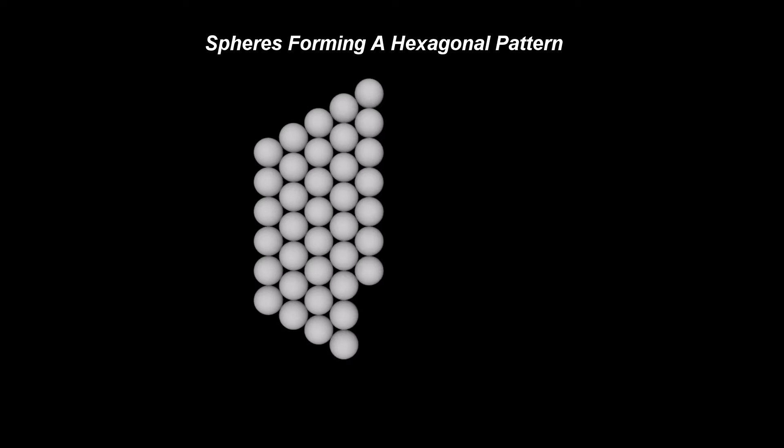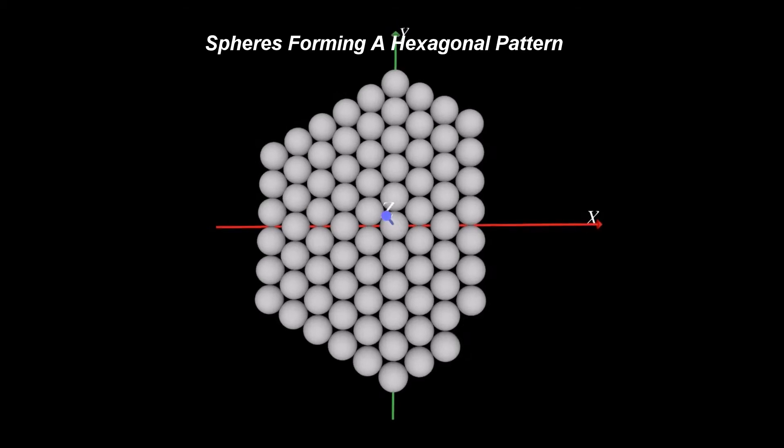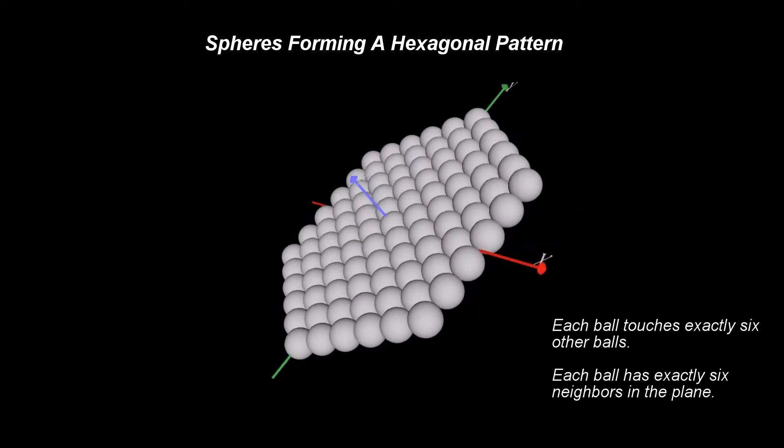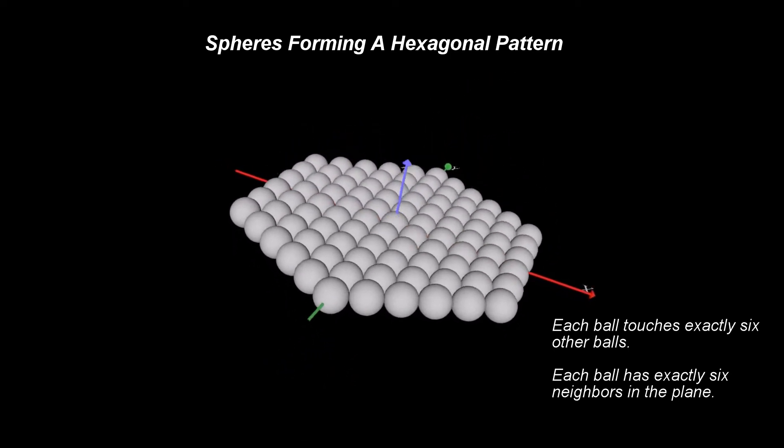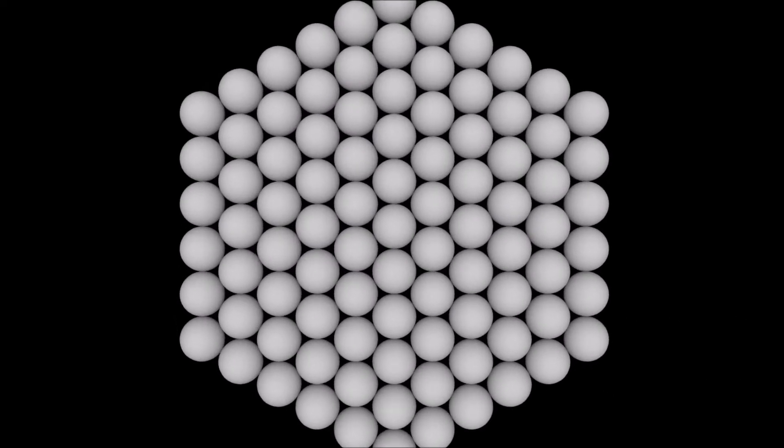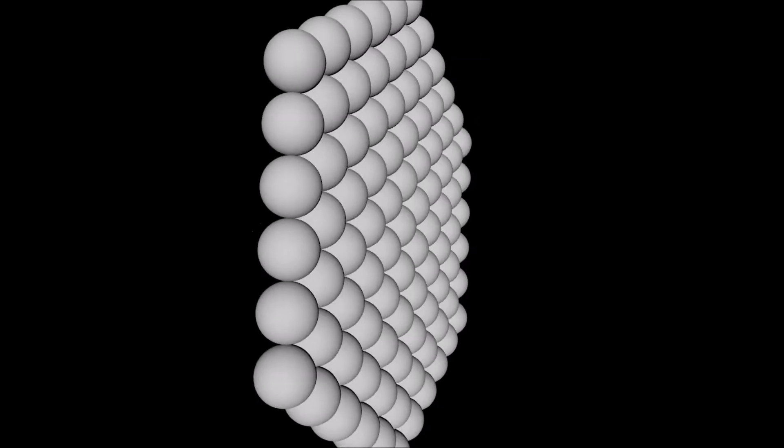When you ask your friend to fill up her room with ping pong balls, you get surprised to see that she, being a more artistic person than you are, is doing it in a totally different way. She starts arranging the ping pong balls on the floor in a hexagonal pattern. In her arrangement, each ball has exactly 6 other neighbor balls in the plane, that fit perfectly relative to each other.